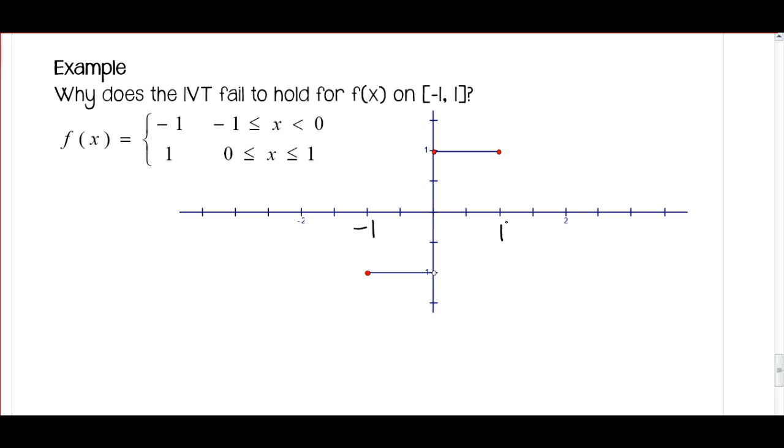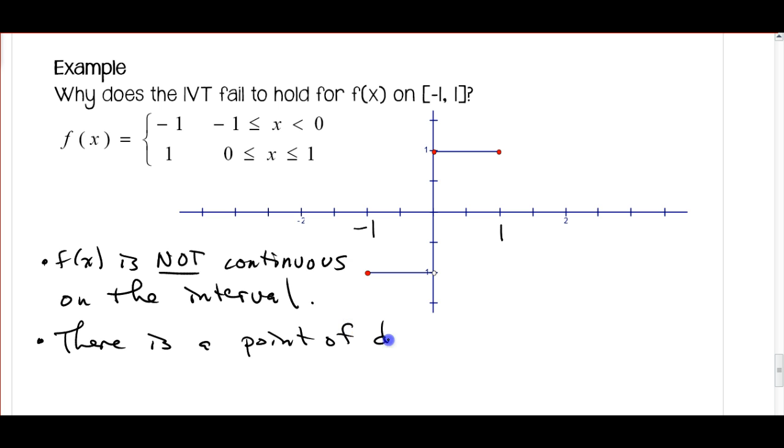So if you look at the graph, you notice that it is not continuous. So the first thing is that f(x) is not continuous on the interval. And the reason it's not continuous is that there is a point of discontinuity at x = 0. Okay, so this is why it fails the Intermediate Value Theorem.